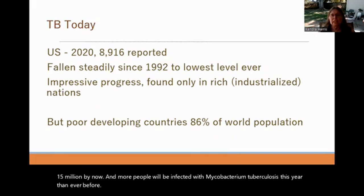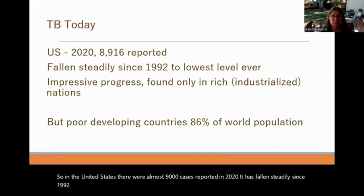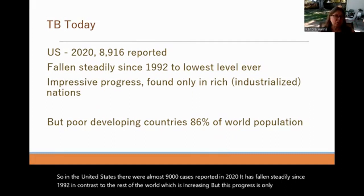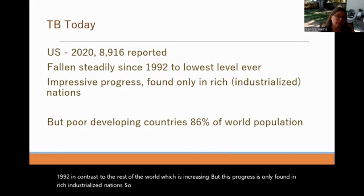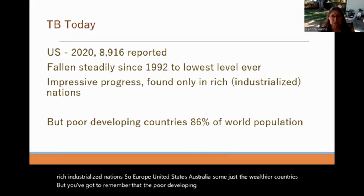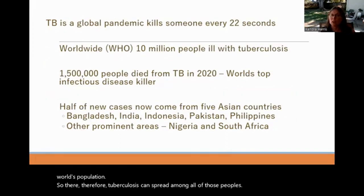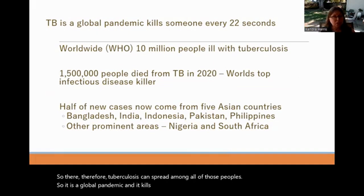In the United States, there were almost 9,000 cases reported in 2020. Cases have fallen steadily since 1992, in contrast to the rest of the world where they are increasing. But this progress is only found in rich industrialized nations — Europe, the United States, Australia, and other wealthy countries. The poor developing countries make up 86% of the world's population, and tuberculosis can spread among all of those peoples. It is a global pandemic and kills someone every 22 seconds.